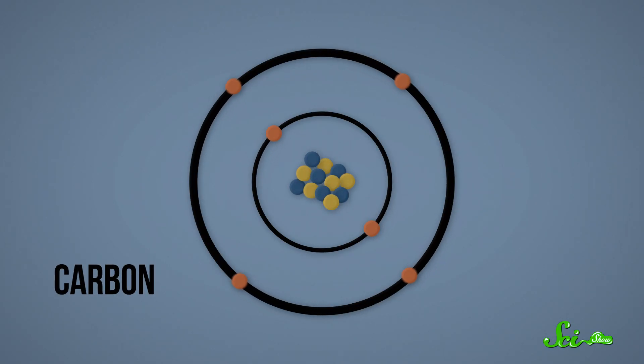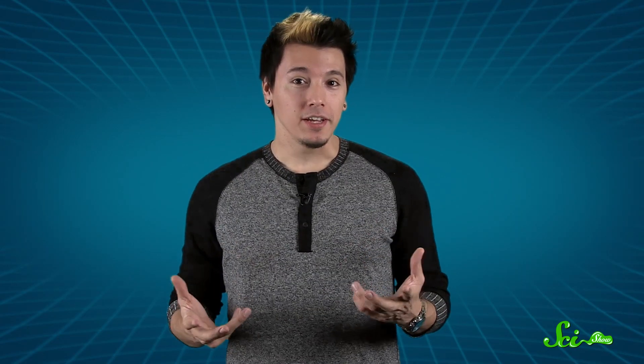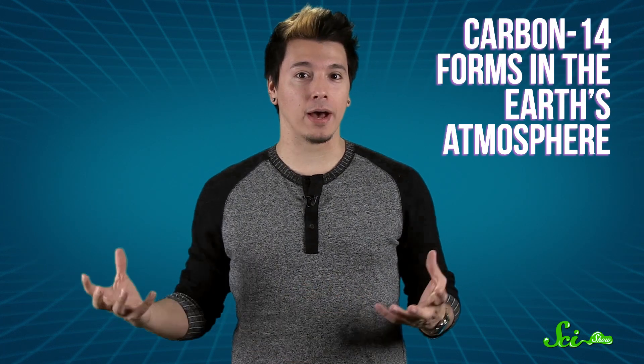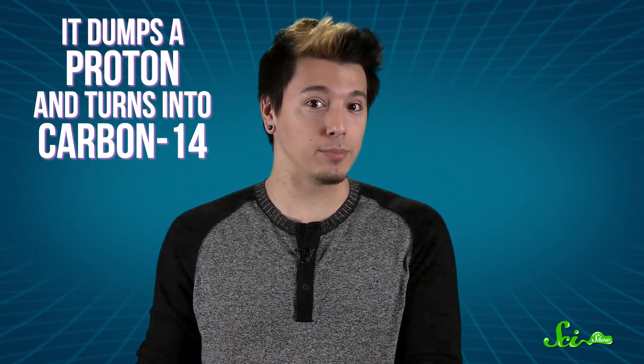Normally, carbon has six protons plus six, maybe seven neutrons. But carbon-14, with eight neutrons, can form high in the Earth's atmosphere when high-powered cosmic rays start a reaction that ends up giving an extra neutron to an atom of nitrogen. This neutron-infused nitrogen isn't stable, so it quickly dumps a proton, turning it into the more stable carbon-14.